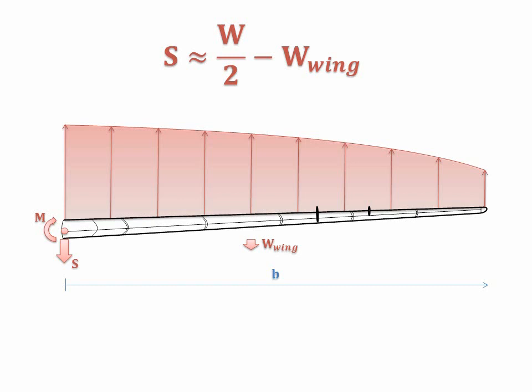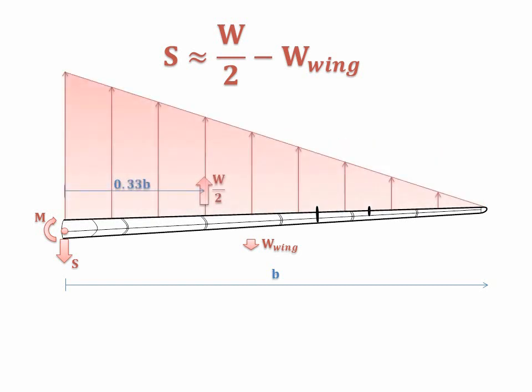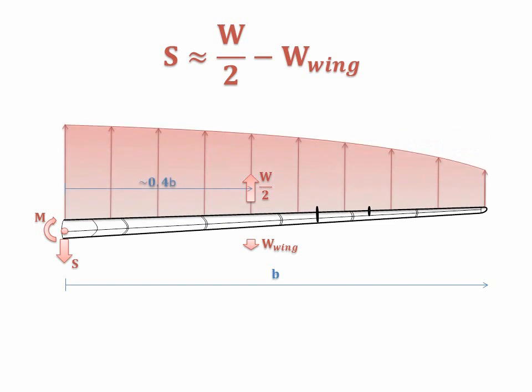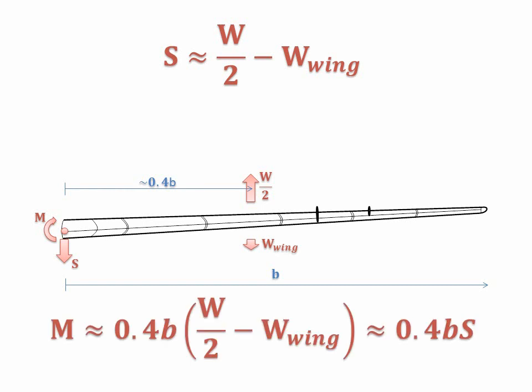If we approximate the distribution as triangular, this is the line of action. If we approximate it as rectangular, this is the line of action. In practice, the answer is somewhere in between. The same approximation works pretty well for the wing weight. So now by applying moment equilibrium, we get our result.